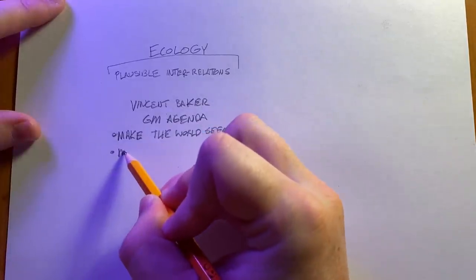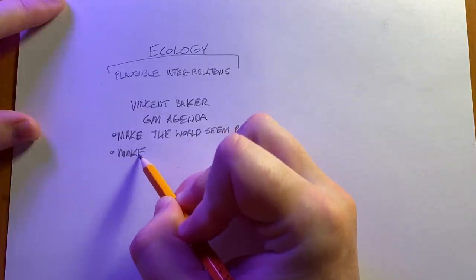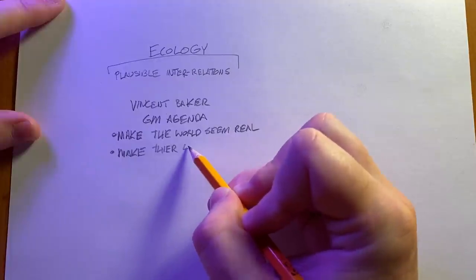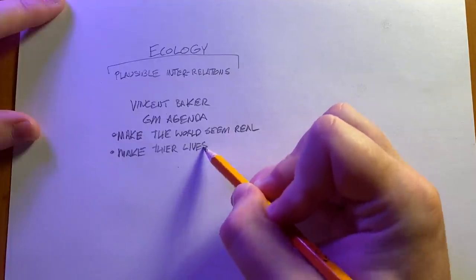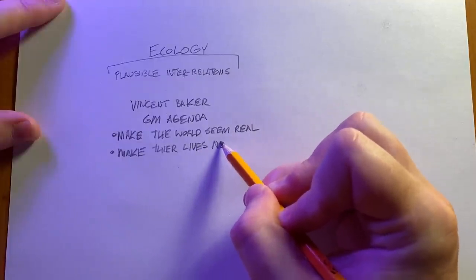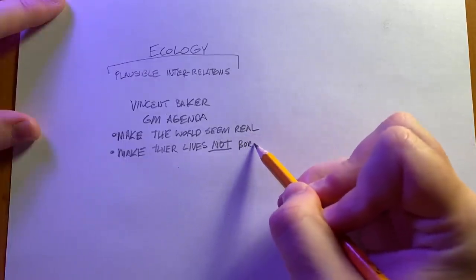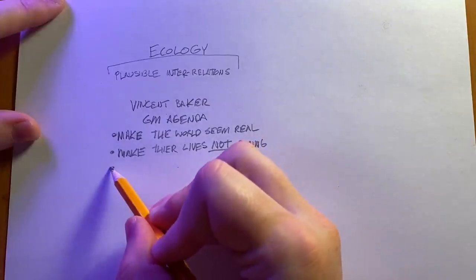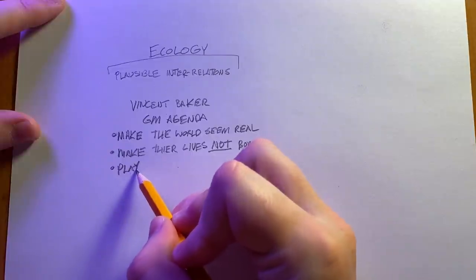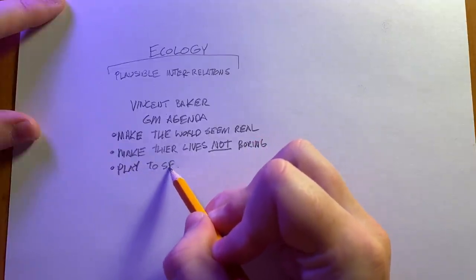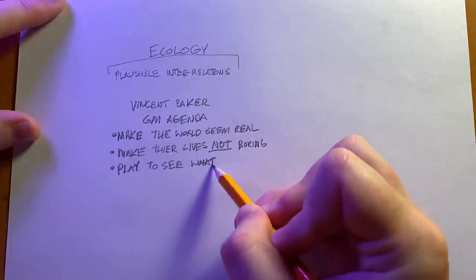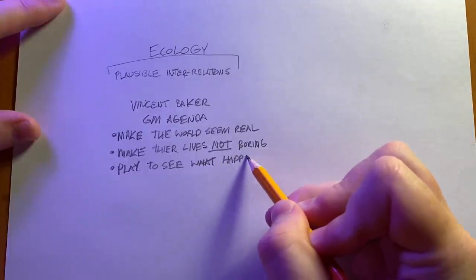A helpful way to keep this ecology in mind is to follow the GM agenda that Vincent Baker puts in his game Apocalypse World: make the world seem real, make the lives of the player characters not boring, and finally, play to see what happens. That last piece on the agenda might not readily offer an interpretation for dungeon ecology, but trust me, we'll get there.